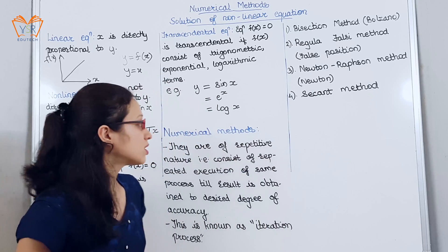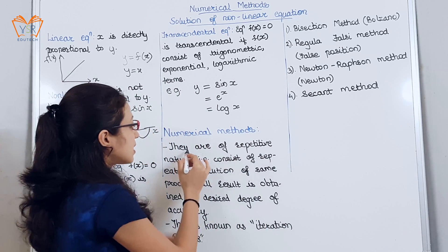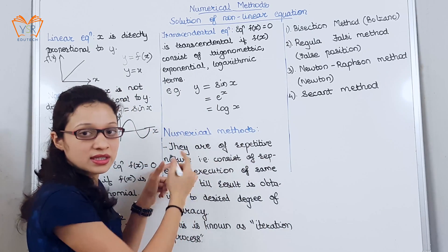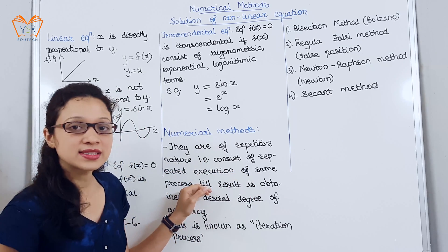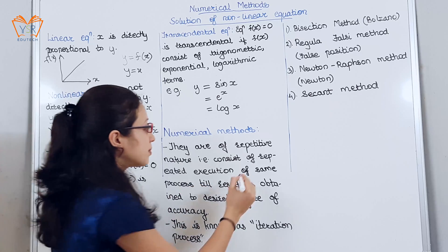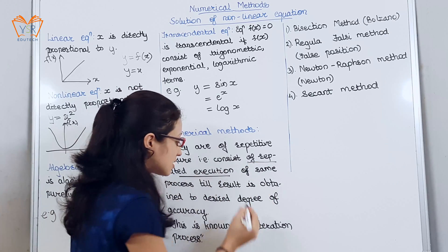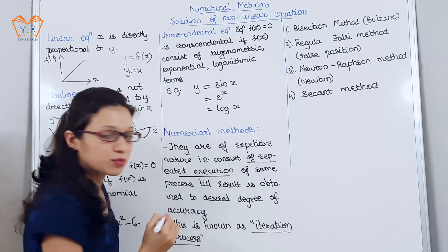Let us understand what are numerical methods. They are basically repetitive in nature, that is, it consists of repetitive execution of the same process until the desired result is obtained. This repetitive execution is nothing but the iteration process.